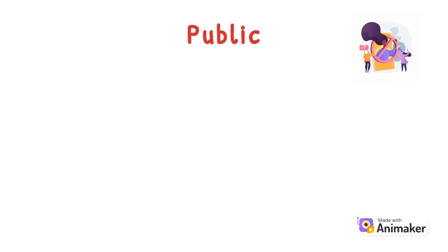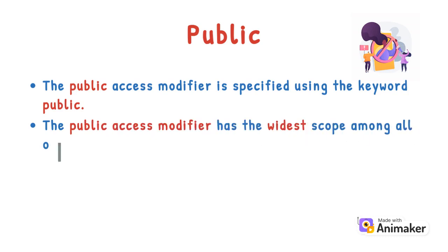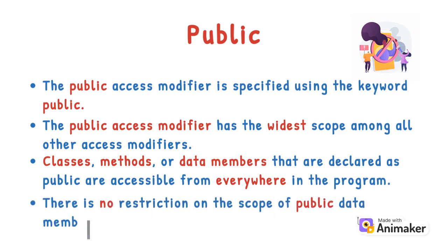Lastly, we have public. The public access modifier is specified using the keyword public. The public access modifier has the widest scope among all other access modifiers. Classes, methods, or data members that are declared as public are accessible from everywhere in the program. There is no restriction on the scope of public data members.